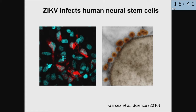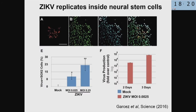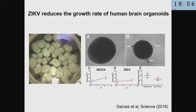The first thing we did was to get neuro stem cells and infect them with the Zika virus. In the images, blue shows the nuclei of the neuro stem cells, and red is an antibody against one viral protein. On the other side we see electron microscopy with brown dots — these are virus particles inside the cells. We also showed that the Zika virus is able to replicate inside these neuro stem cells.